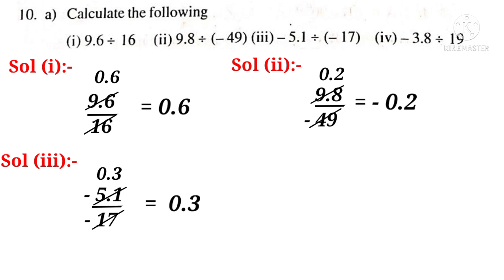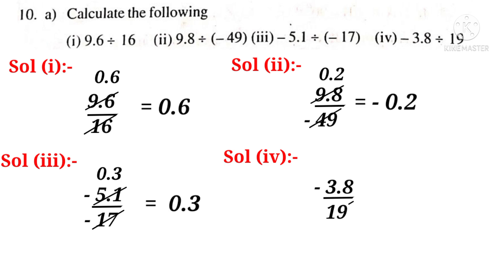Solution 4: minus 3.8 by 19. On simplification by 19, 0.2 times. That is equal to minus 0.2 is the answer.